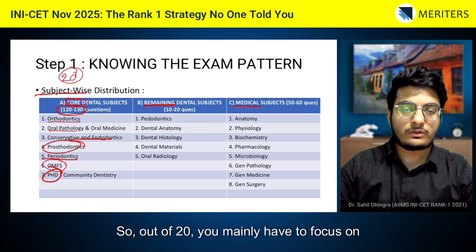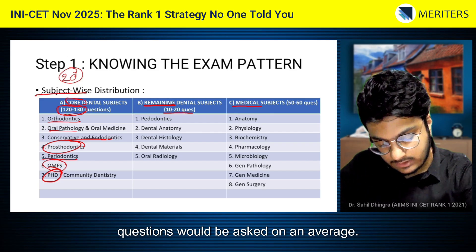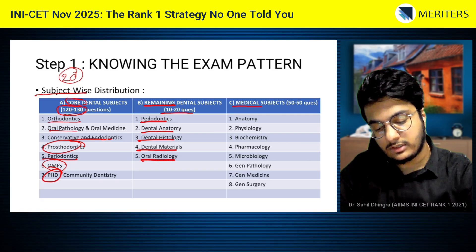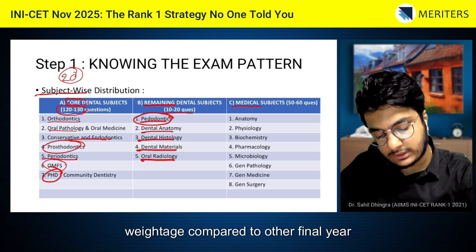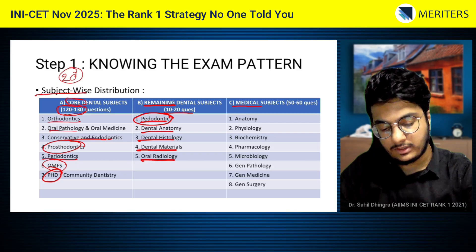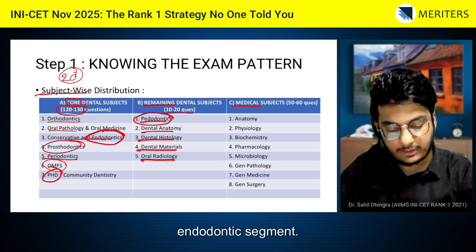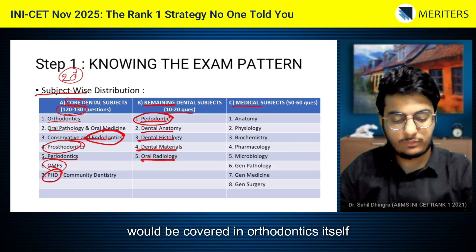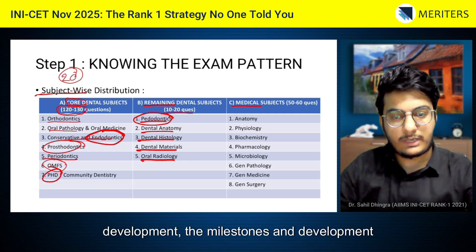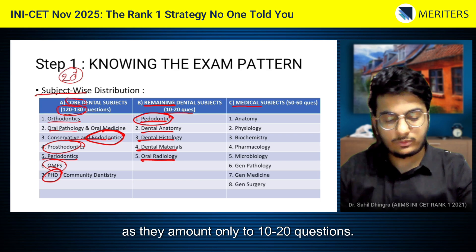Out of 20 subjects, you mainly have to focus on these seven. The remaining dental subjects — periodontics, dental anatomy, dental histology, dental materials, and oral radiology — will have hardly 10 to 20 questions on average. Regarding pedodontics, I have only covered areas not part of either ortho or endo. For example, a vital pulp therapy question for primary teeth is taken into pediatric endodontics, and anything related to orthodontics is covered in orthodontics itself. Pedodontics essentially includes child abuse, developmental milestones, and similar topics. These five subjects are the least important, amounting to only 10–20 questions.